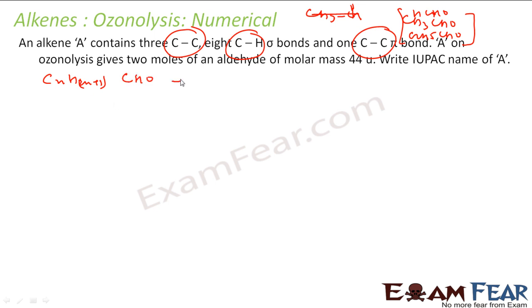The molar mass is 44. Carbon is N plus 1. Let's add this: carbon is 12N, hydrogen is 2N plus 1, plus carbon 12, hydrogen 1, oxygen 16. Total is 44. Solve the value of N. N comes out to be 1. That means my compound is CH3CHO.